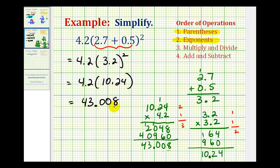And again, this product does seem reasonable because we know if we had 4.2 times 10, it would be 42, so 4.2 times 10.24 should be a little bit larger.